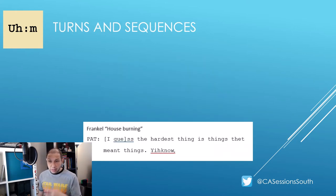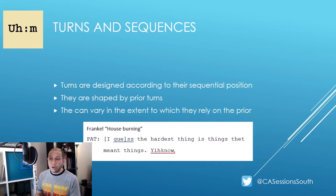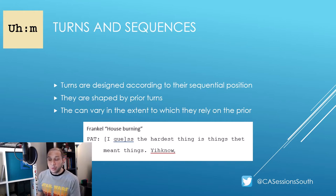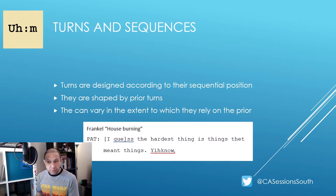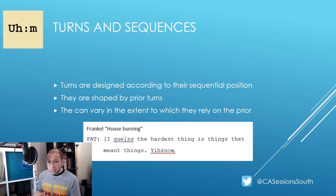When it comes to turn design, turns can be designed according to their sequential position within an interaction, meaning they are shaped by what came before them. However, turns at talk can vary in the extent to which they rely upon the previous turn to be meaningful. For example, the turn 'I guess the hardest thing is things that mean things, you know' is made meaningful when you realise someone is talking on the phone about losses suffered from a house fire — it relies heavily upon prior turns and contextual information to be understood.